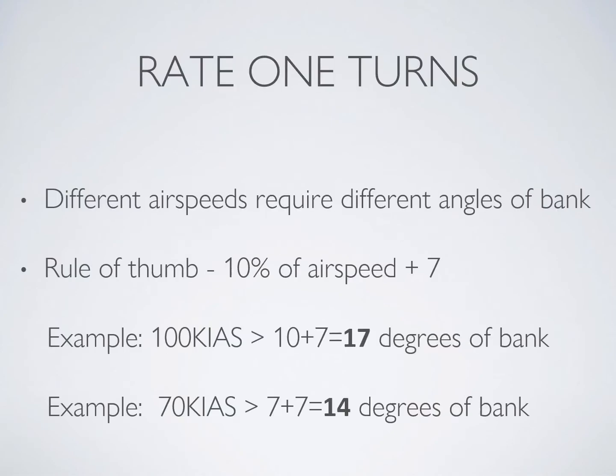Now we know we're flying under a partial panel situation. Let's talk about why we time these turns. A rate one turn is where you do a complete 360-degree turn in two minutes. The cool thing about a rate one turn is it doesn't matter what speed you are going — that turn will be executed in the same amount of time, because different airspeeds give you a different radius. If you are going more slowly, your angle of bank will be less than if going faster.